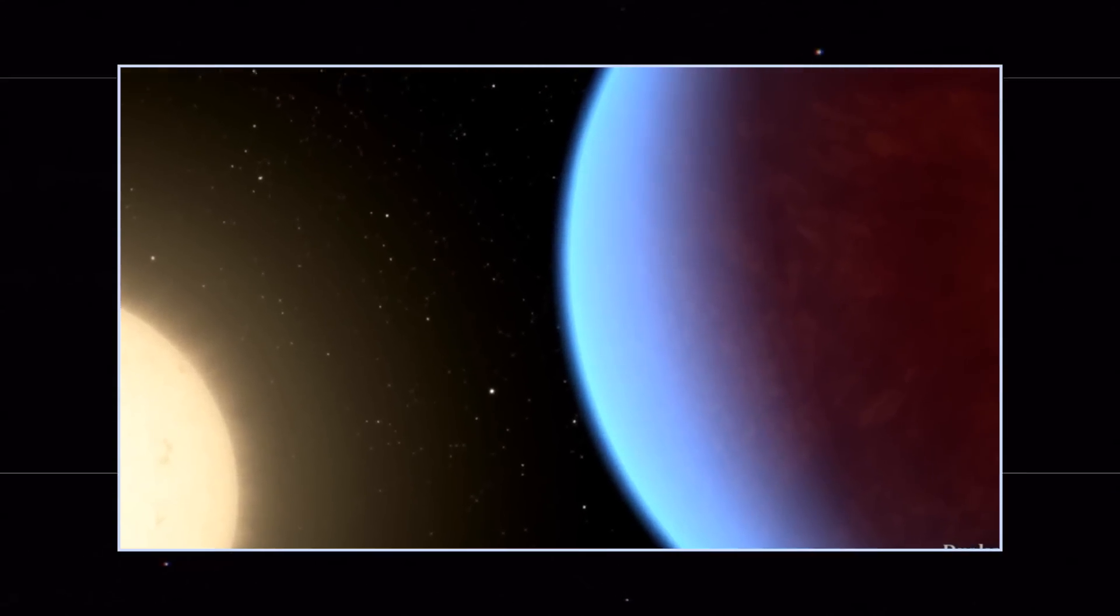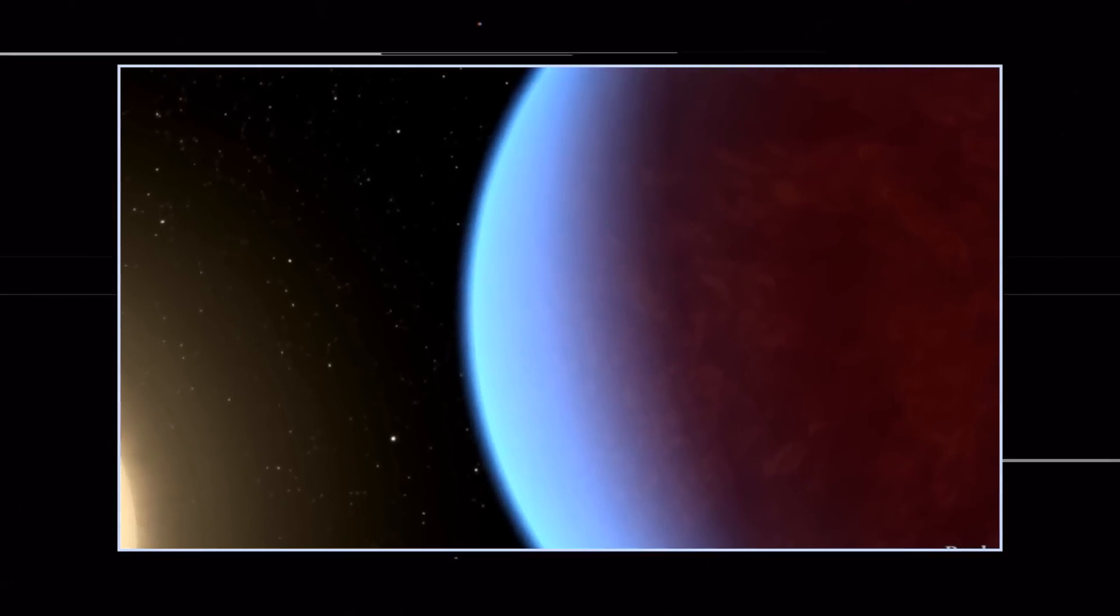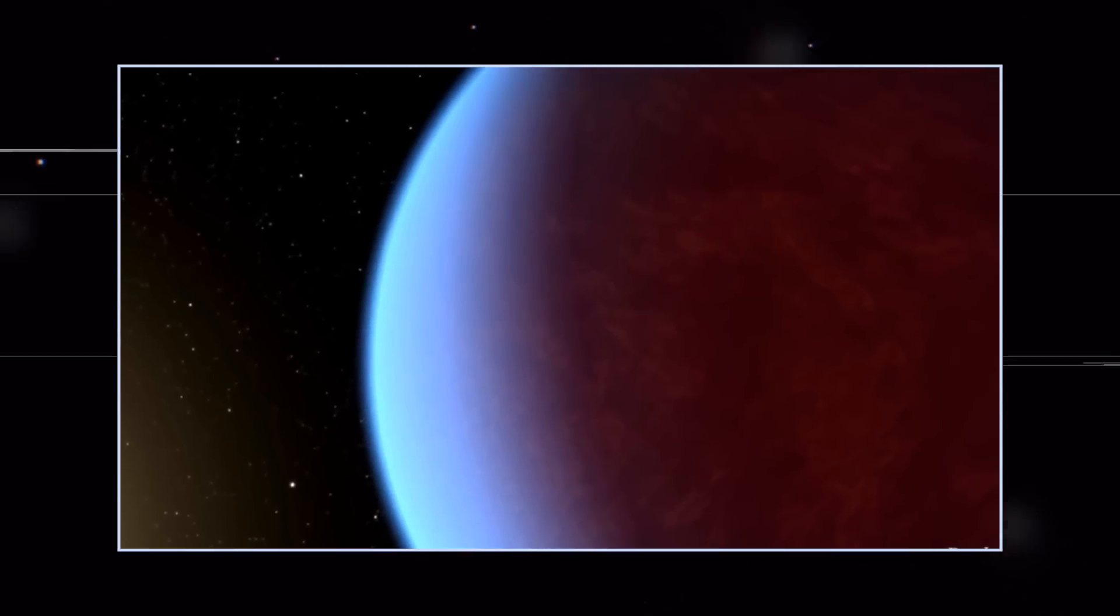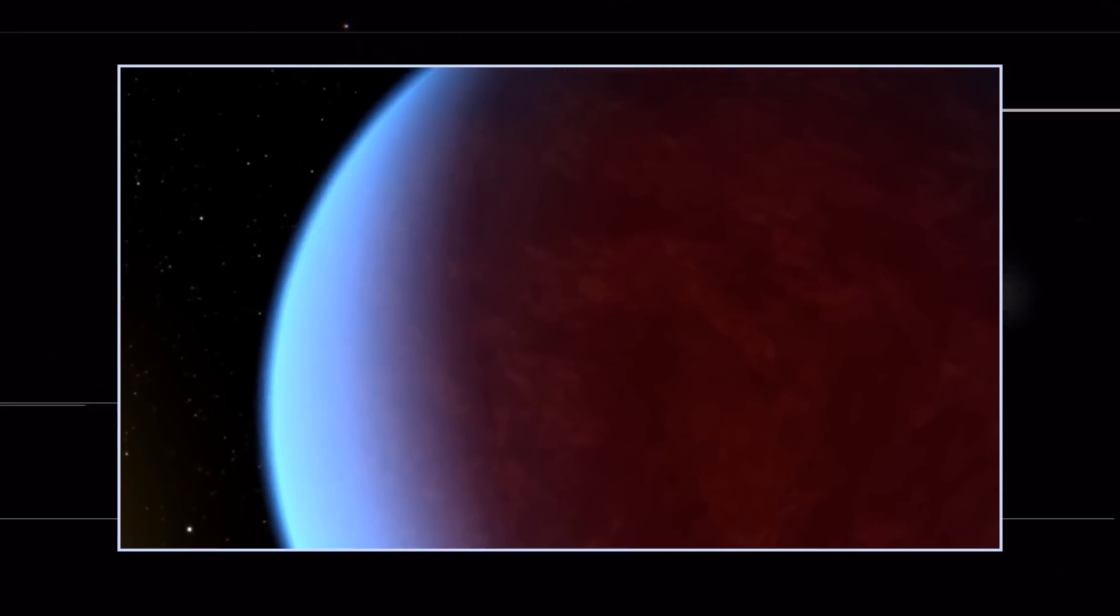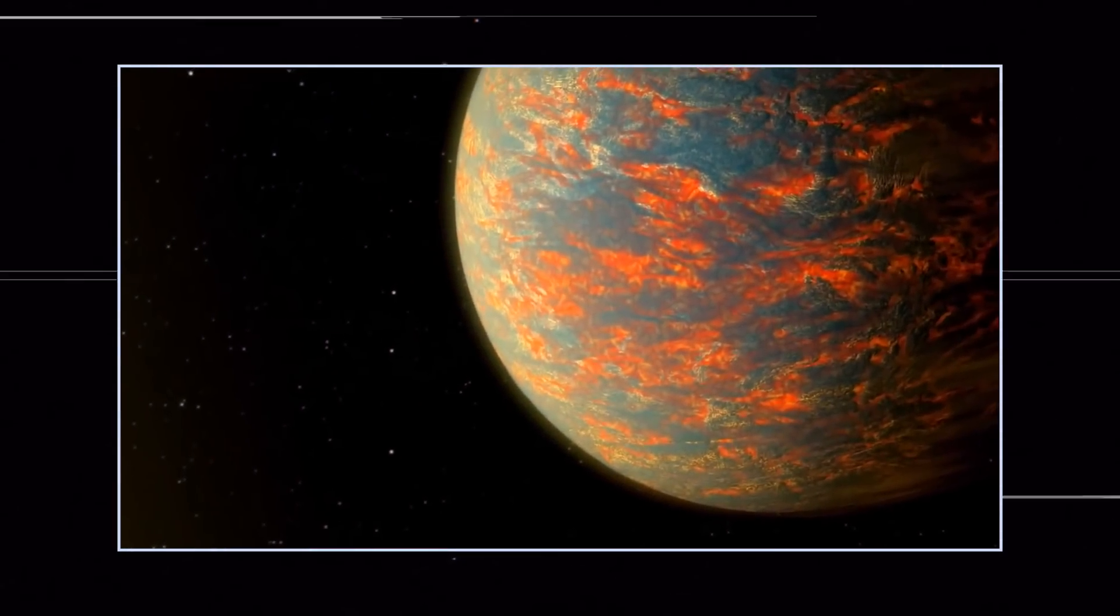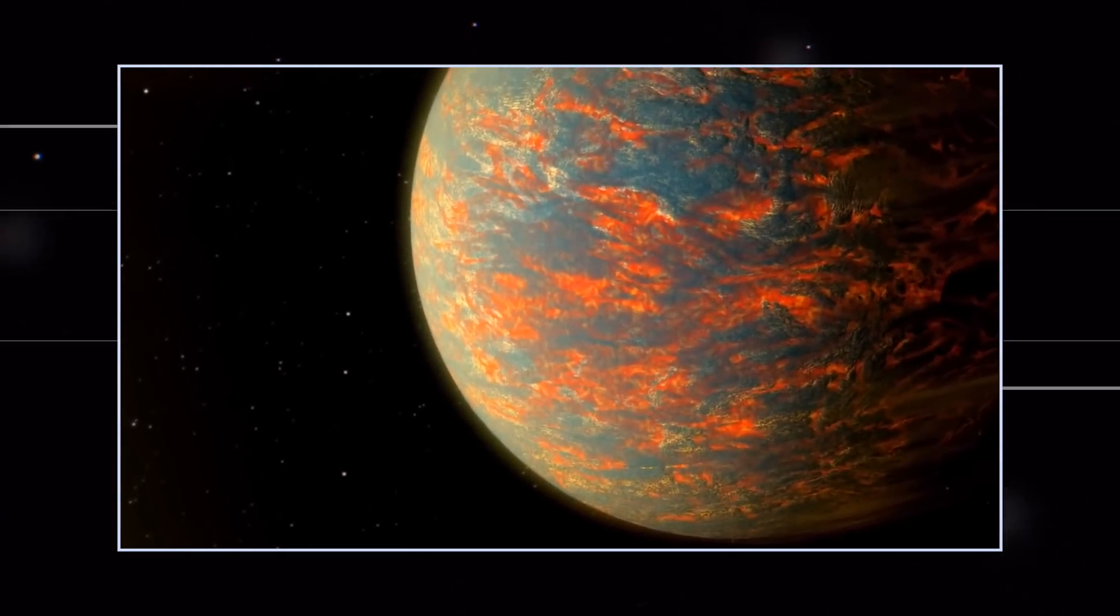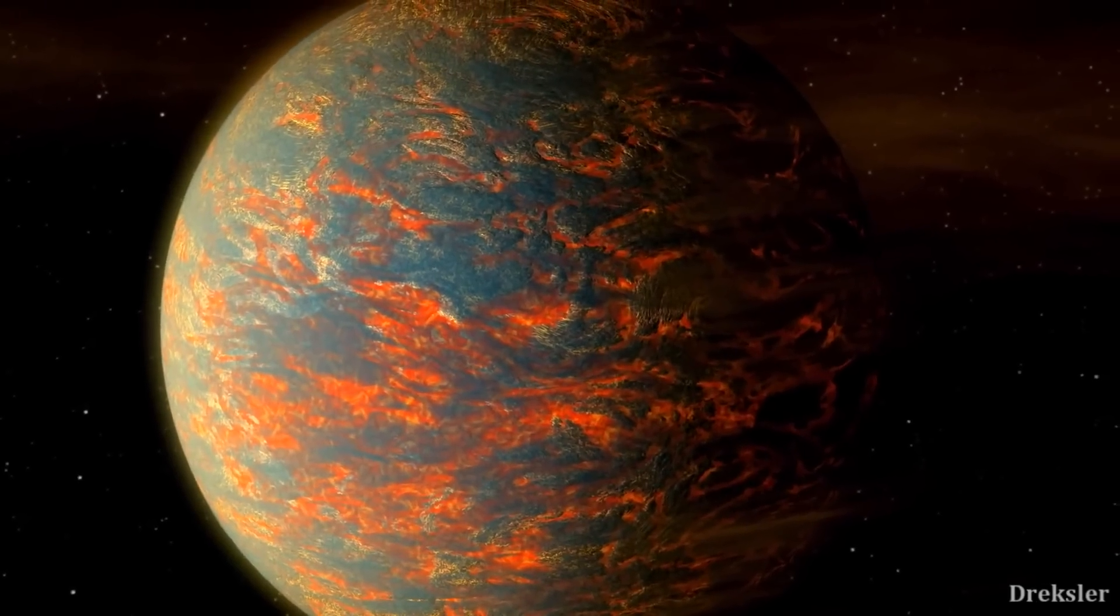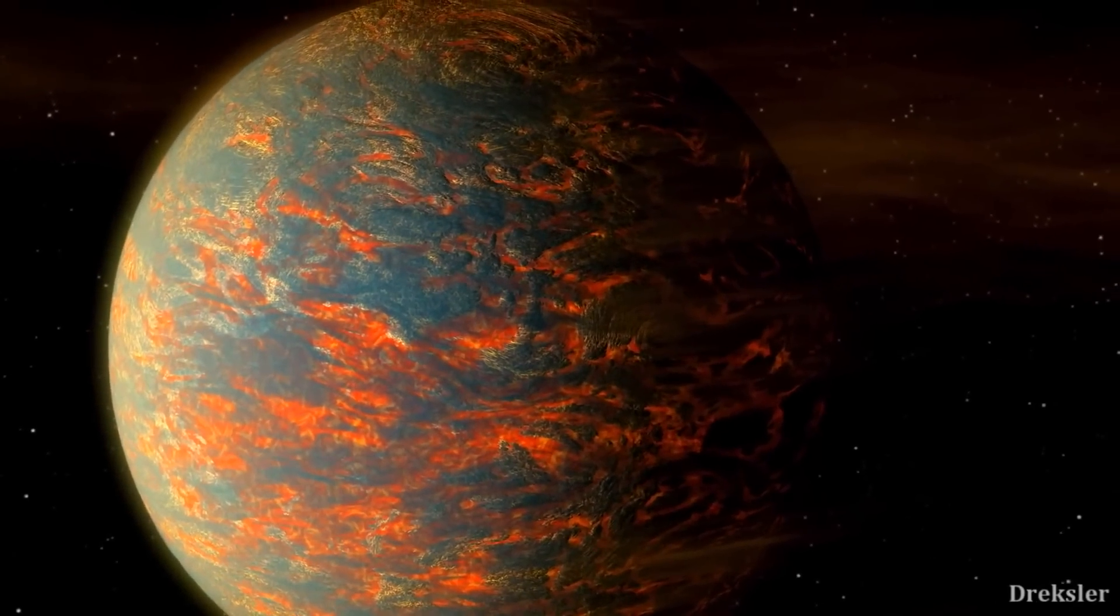Planets that orbit this close to their star are assumed to be tidally locked, with one side facing the star at all times. As a result, the hottest spot on the planet should be the one that faces the star most directly, and the amount of heat coming from the day side should not change much over time.